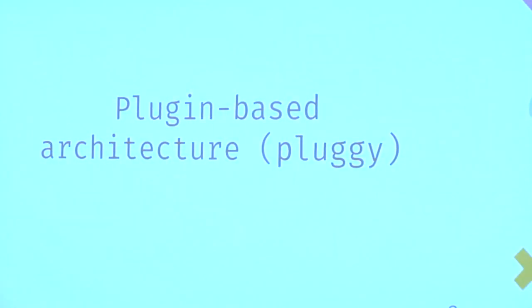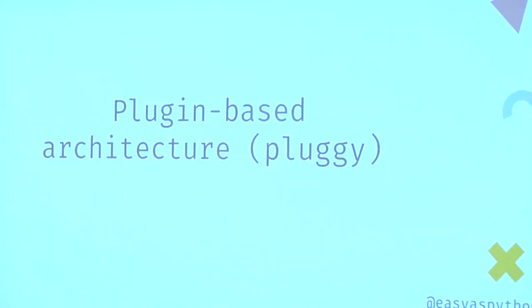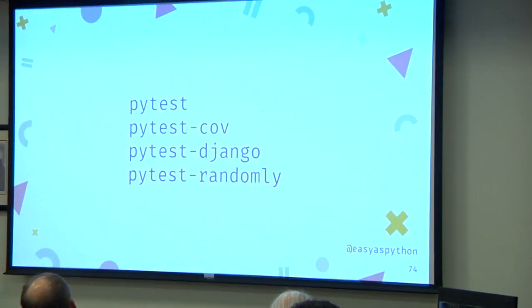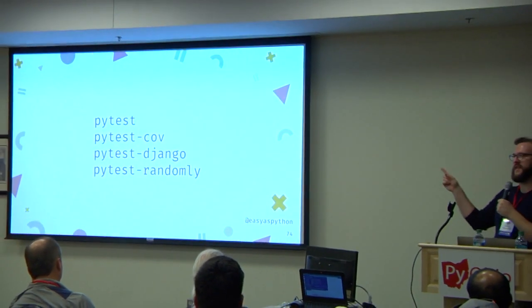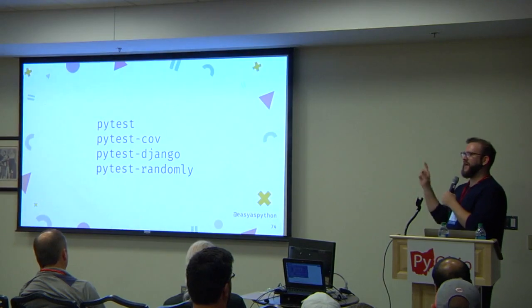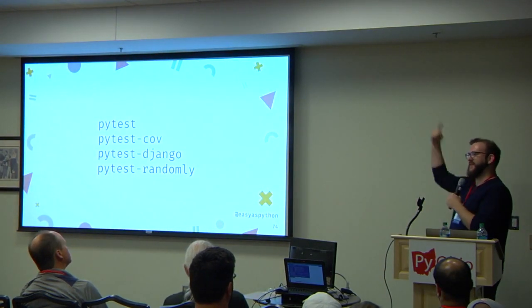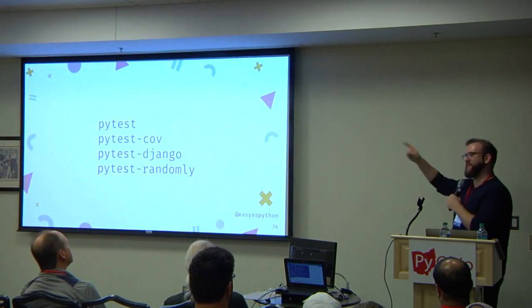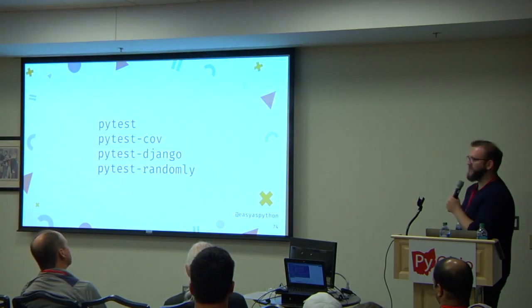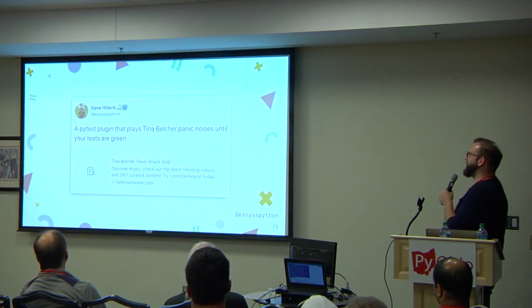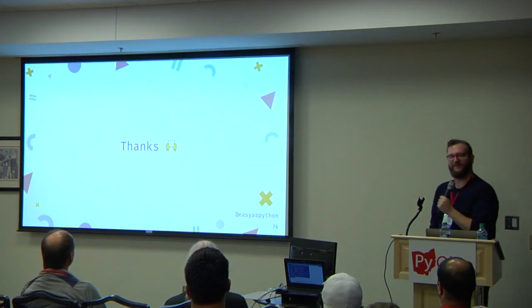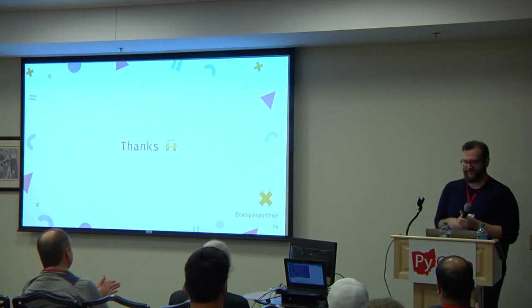Pytest works with Jenkins and tox. It has a plugin-based architecture with a number of great plugins — pytest-cov, pytest-django, and pytest-randomly which runs your tests in a random order every time to uncover cases where one test depends on another running first. We've uncovered a handful of problematic tests with that. I think it'd be cool to have a pytest plugin that plays Tina Belcher panic noises until your tests are green. That's all I have — thank you!